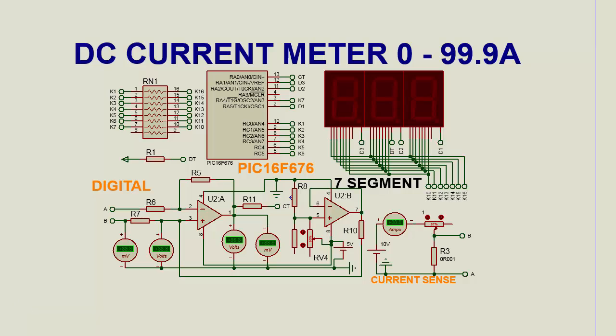Now, look at the working action. This is current sense resistor. And these two terminals are the multimeter leads that you will use to measure the current flowing through a certain circuit.